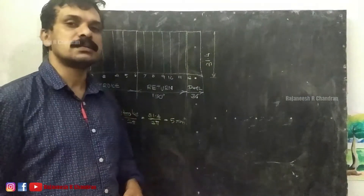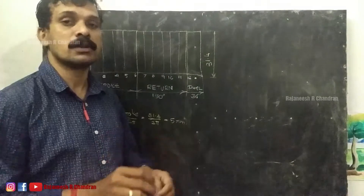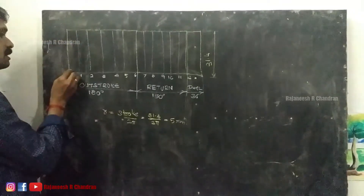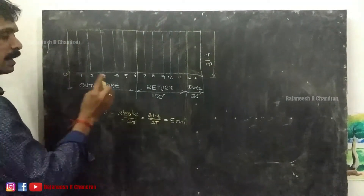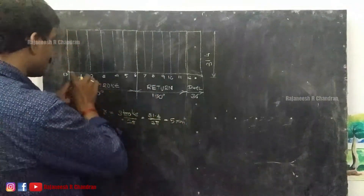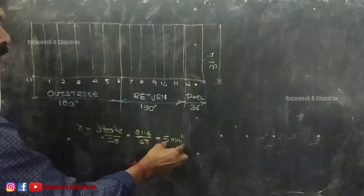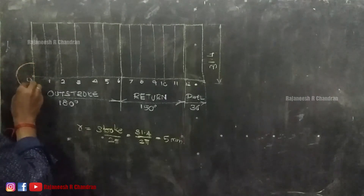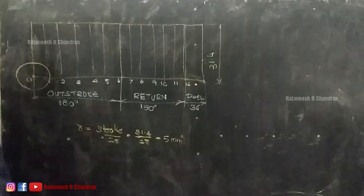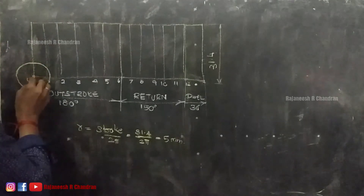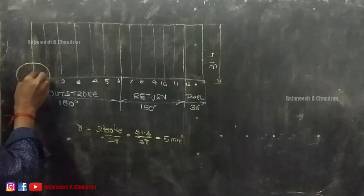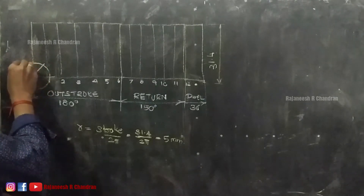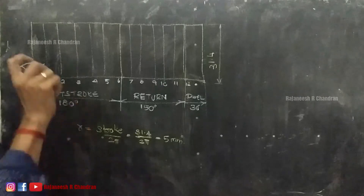The method of constructing the displacement diagram for cycloidal motion: first calculate the radius of the generating circle, which we have done. At the starting point, draw a circle with 5 mm radius — this is the generating circle. Keeping the horizontal line as reference, divide the circle into six equal parts, so every angle is 60 degrees.